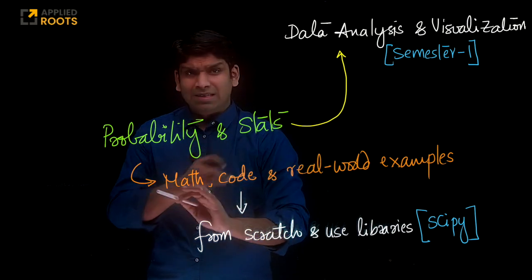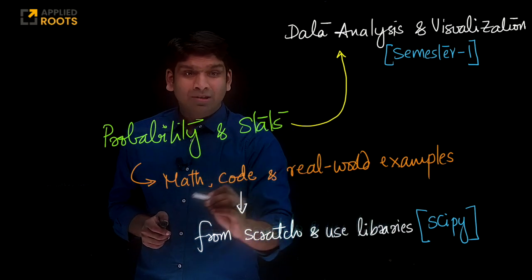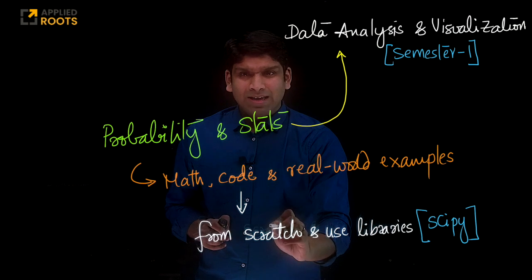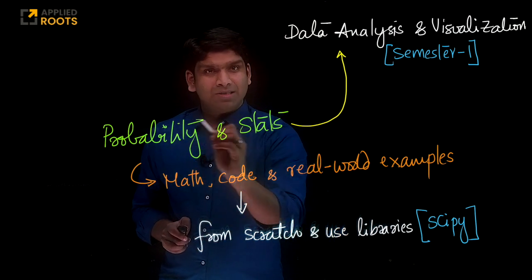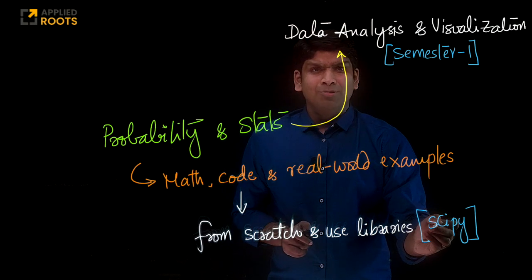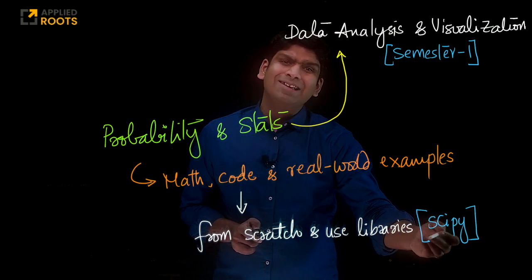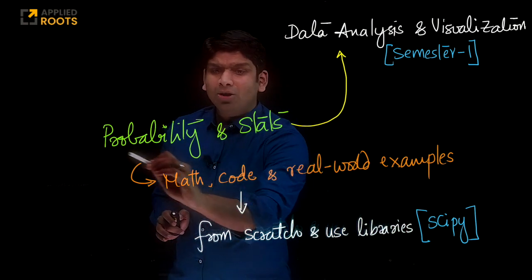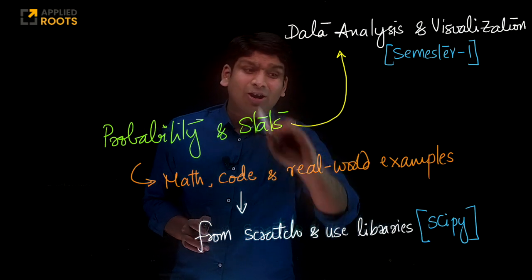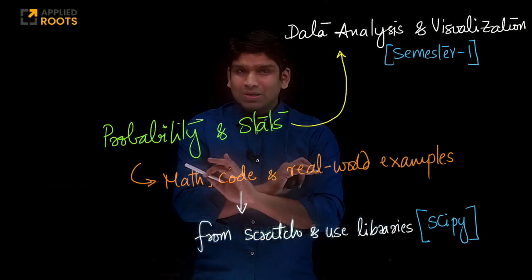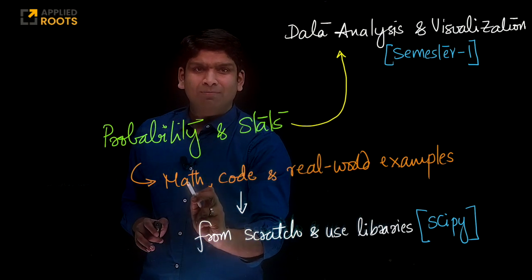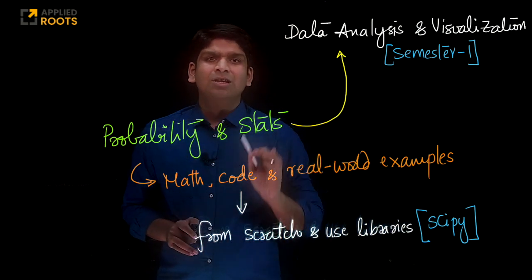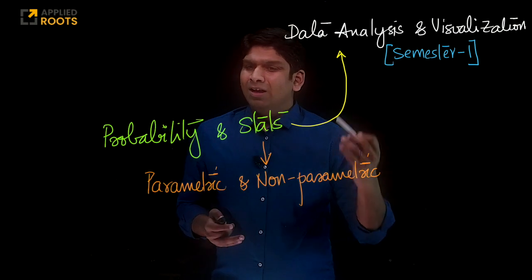For each of these techniques, we will learn the underlying mathematics and focus on code. Whenever we do coding, we will use two methods: implement from scratch to understand the underlying mathematics well, and also use popular libraries. For some probability and statistics topics, we will use functionality built into SciPy. All of these concepts will be introduced in the context of real-world examples, covering both in-depth math and coding from scratch using libraries.